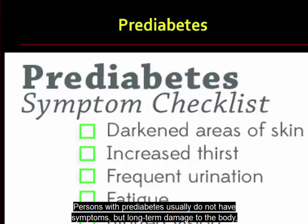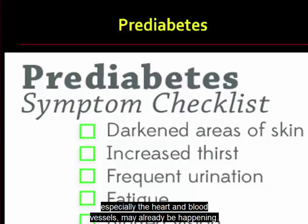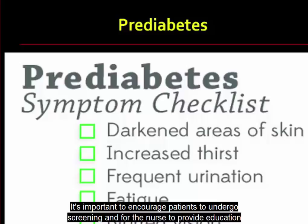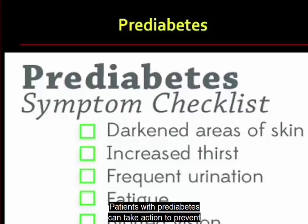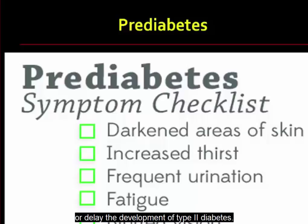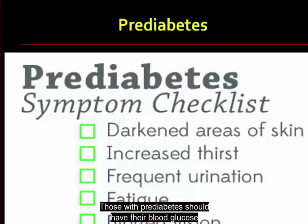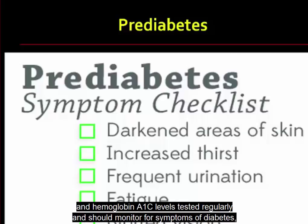Persons with prediabetes usually do not have symptoms, but long-term damage to the body, especially the heart and blood vessels, may already be happening. It's important to encourage patients to undergo screening and for the nurse to provide education about managing risk factors for diabetes. Patients with prediabetes can take action to prevent or delay the development of type 2 diabetes.